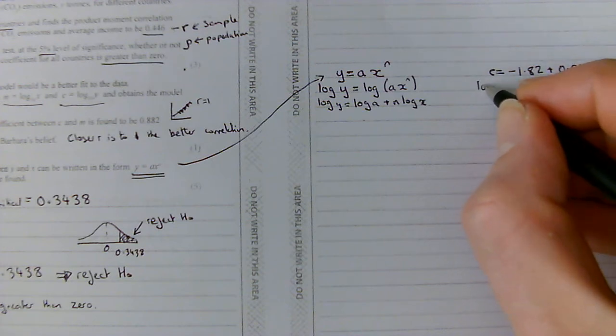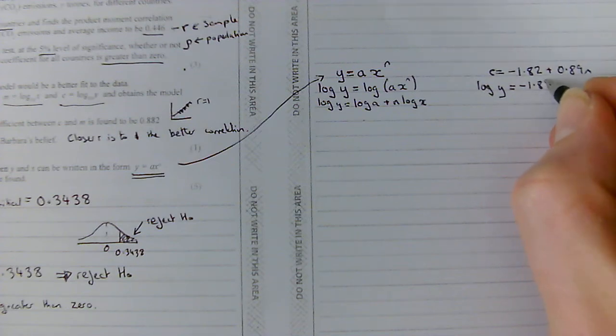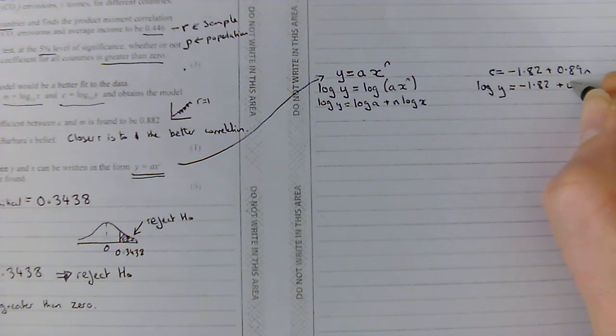And we've got log of y, which was C, is minus 1.82 plus 0.89 log x.